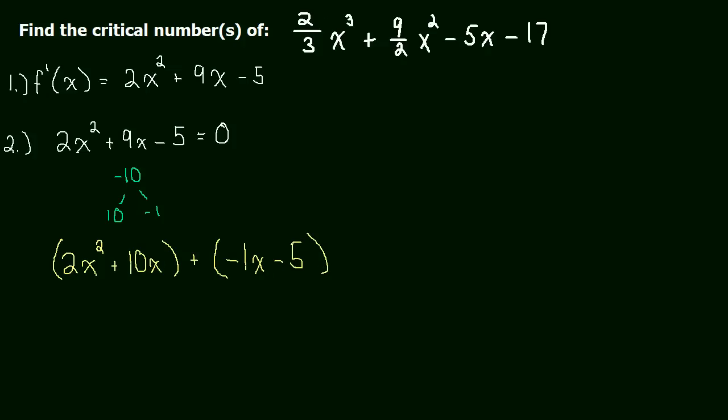So we used this first term here, 2x squared, and the last term, minus 5. So we kept the 2x squared, and we kept the minus 5.